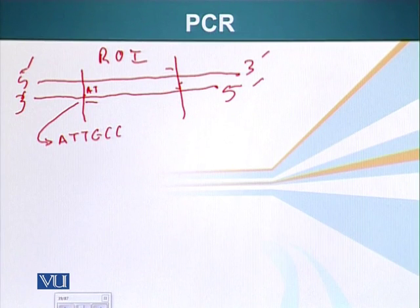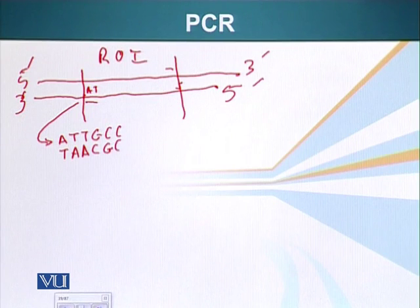So the complementary primer will have a sequence like this. It is a DNA primer which we use in the PCR reaction not an RNA primer which is made by primase in the cell. So here is the primer. Again, I will point out that primers are generally 20 nucleotides long but we are making this smaller primer just for the sake of simplicity.